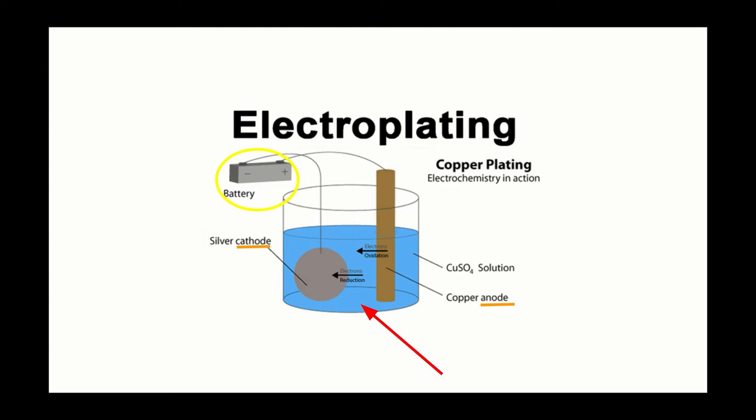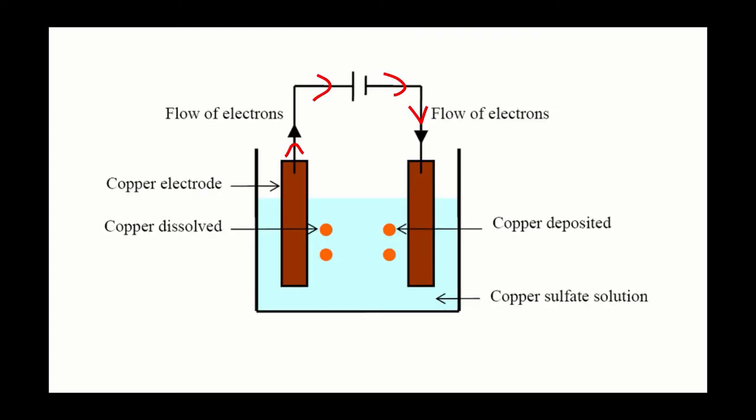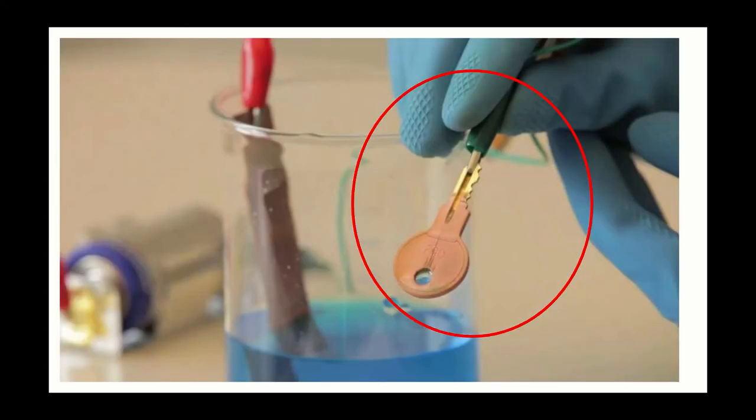When the current is passing through the circuit, the electrolyte separates and some of the metal atoms within it are deposited in a thin layer on the surface of one of the electrodes, thus being electroplated.